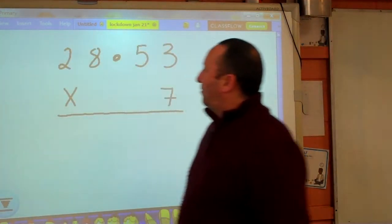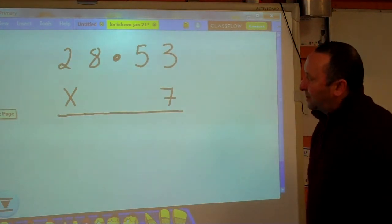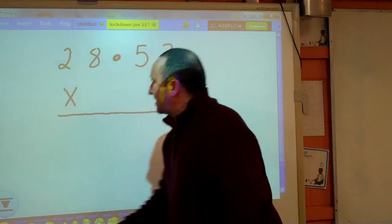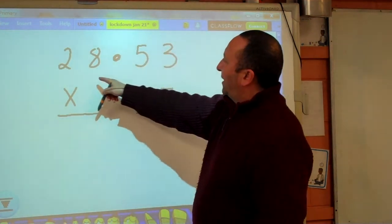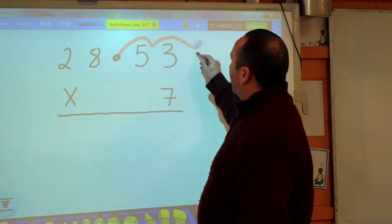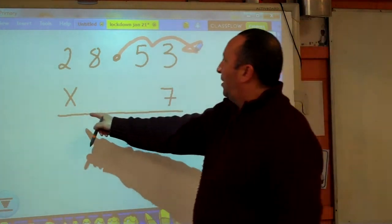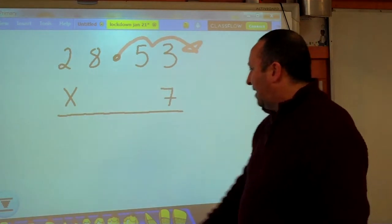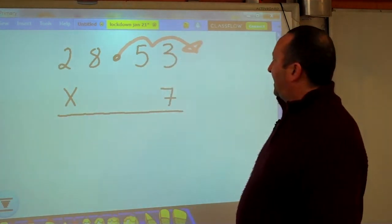Moving on very quickly, number two is a similar type of sum. It's a single digit multiplication. So before the sum even starts, I'm going to pretend that is not 28.53, that is 2853 to be multiplied by 7. I won't put my answer in until the very end, so then off I go using my tables.